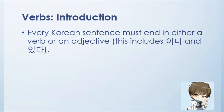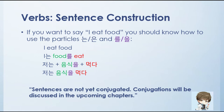In a Korean sentence, it must end in either a verb or an adjective, including Ida and Itda. This is the golden rule of Korean sentences. Let's discuss sentence construction and verbs. If you want to say 'I eat food,' you should know how to use subject particles nun or un, and object particles rule or ul. So the subject is I, the object is food, and the verb is eat. Nun or un goes on the subject, and rule or ul goes on food. So that will be: chanun, shikul, mokda.